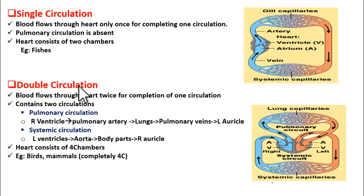Finally, we can say double circulation is the more efficient one. I hope you understood. Thank you.